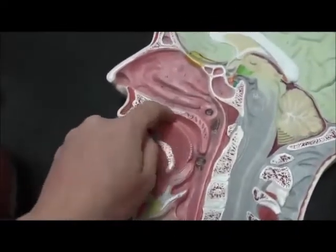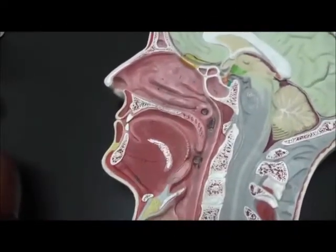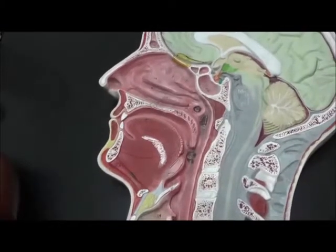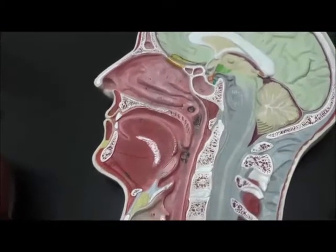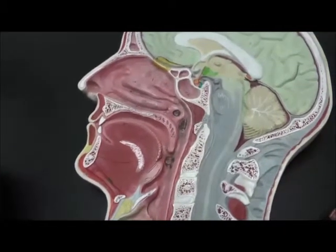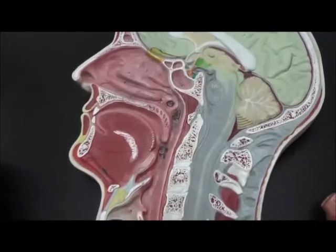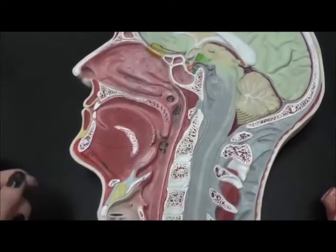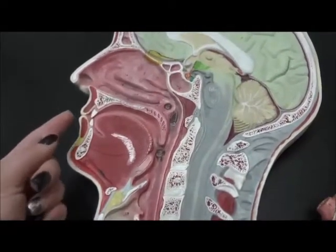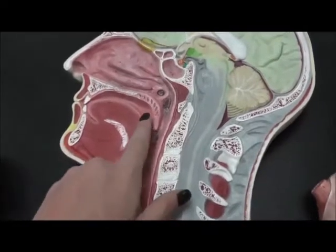In the oral cavity, we have an inner mucosal layer that is lined with non-keratinized stratified squamous epithelium. The muscularis layer isn't very special and the adventitia surrounds the back layer.